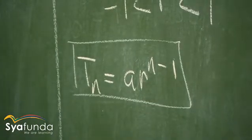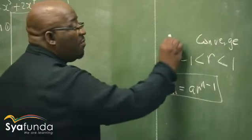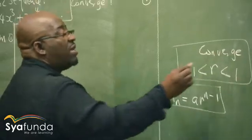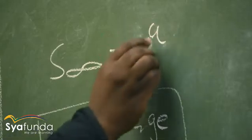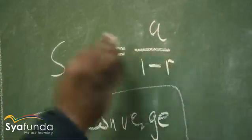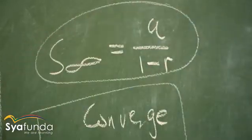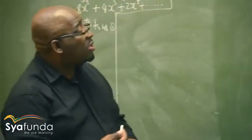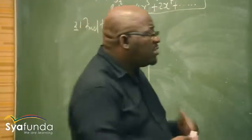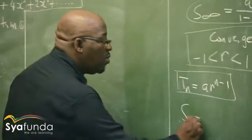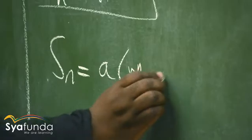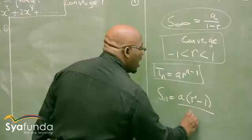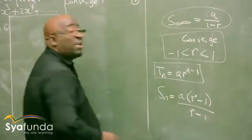What else do we know about the geometric sequence? It converges, and it is where we can find the sum to infinity. Sum to infinity is a over 1 minus r. That's the formula we use to calculate the sum to infinity. Another important part of the geometric sequence is the sum: Sn equals a times (r to the power n minus 1) over (r minus 1), depending on which one is bigger.